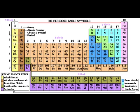You'll notice that the periodic table is color coordinated for metals, non-metals, and metalloids. Metals are found mainly on the left-hand side of the periodic table, and the non-metals are found on the right-hand side, with a staircase-type divider that represents the metalloids.